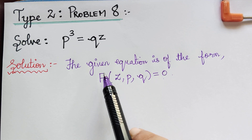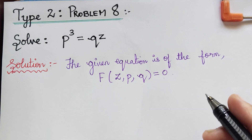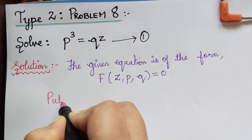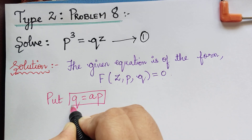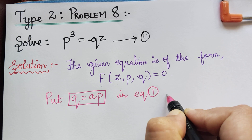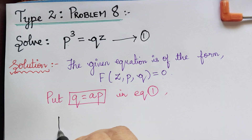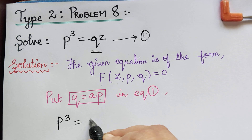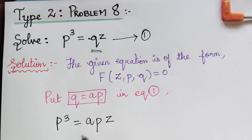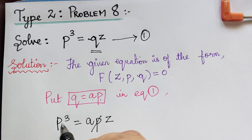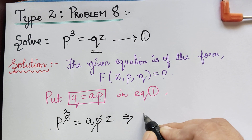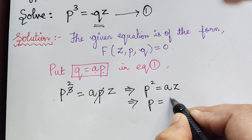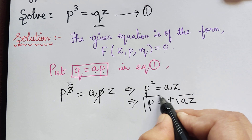In that case, what we have to do is substitute q = ap in equation 1. So in equation 1 we have p³ = qz. At the place of q, we replace it by ap, giving p³ = apz. One p on each side cancels, and we get p² = az. From this we obtain p = ±√(az).